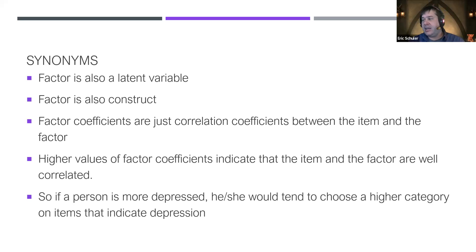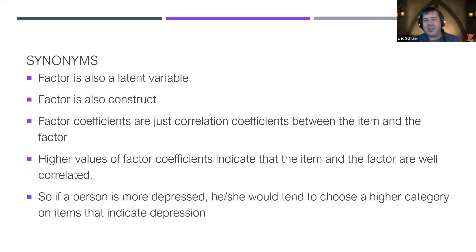If we think of it as a continuum, on one side we have an exploratory factor analysis, on the other side we have a confirmatory. You can have exploratory-confirmatory or more constrained exploratory analyses — it's really a continuum. When we're talking about factor coefficients, this is just the correlation between the item and the factor. Higher values indicate the item and factor are well correlated, as they should be. A low coefficient is an issue.